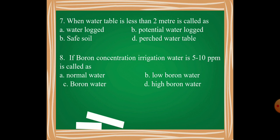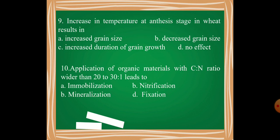Moving on, the ninth question is: Increase in temperature at anthesis stage in wheat particularly results in increased grain size, decreased grain size, increased duration of grain growth, or there is no effect?